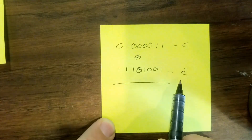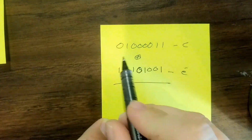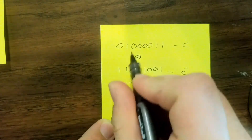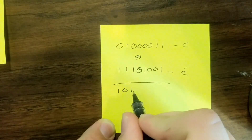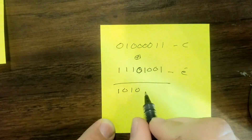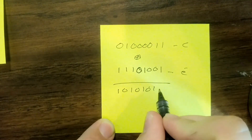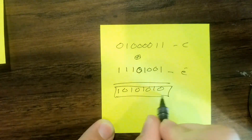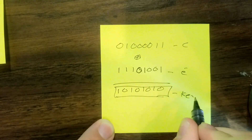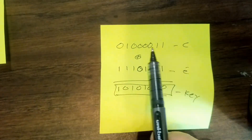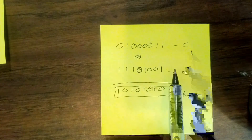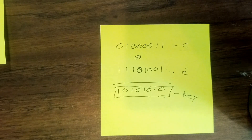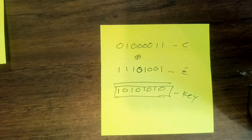If we actually take our plaintext and our ciphertext and do the exact same operation on them again, you'll see that we get 10, 10, 10, 10 — which is our key. So if we've successfully managed to get a plaintext as well as a ciphertext, we now have the key, which we can use to go back and decrypt all of our messages.